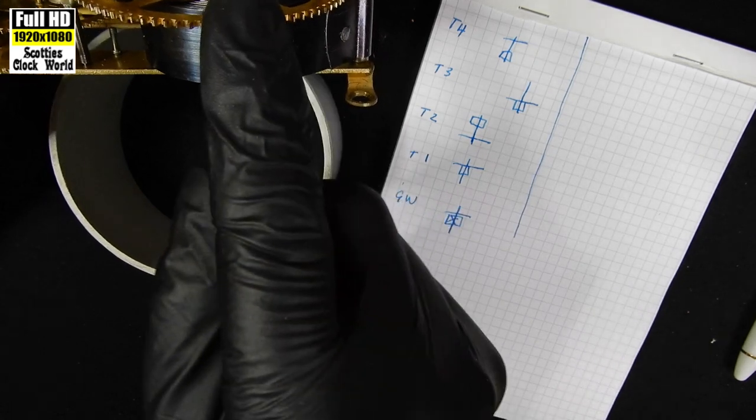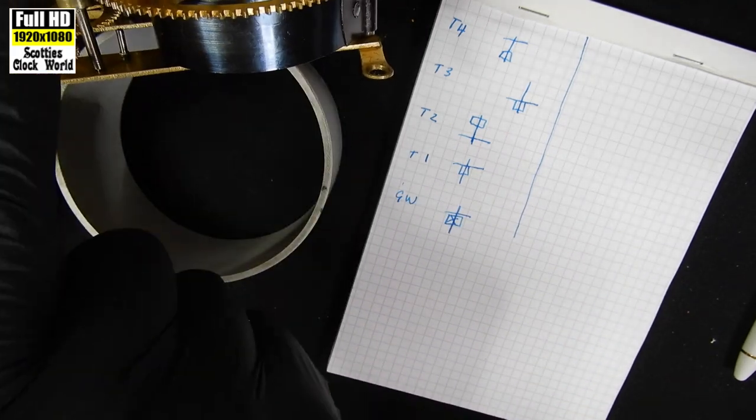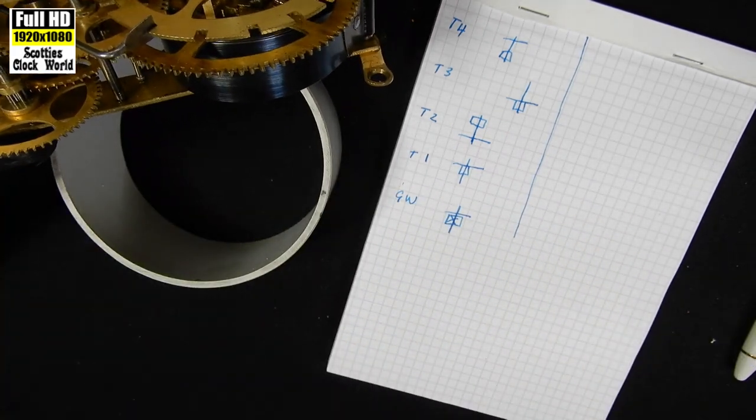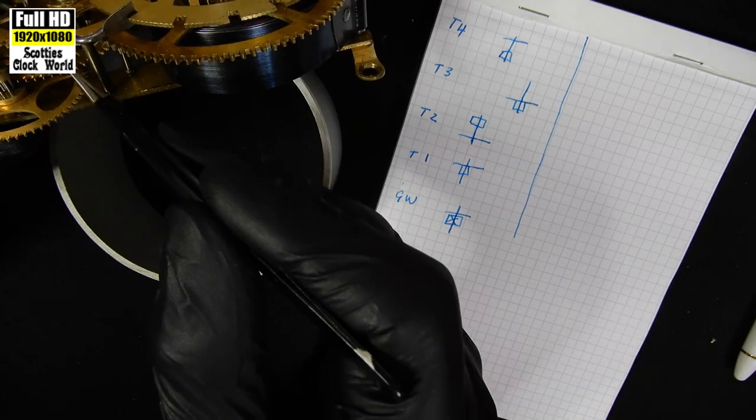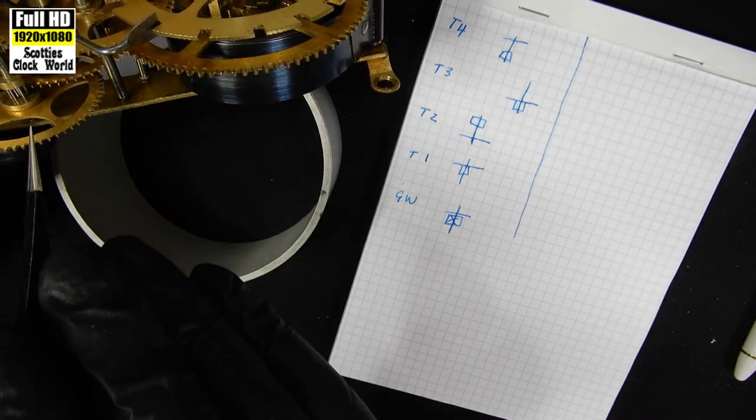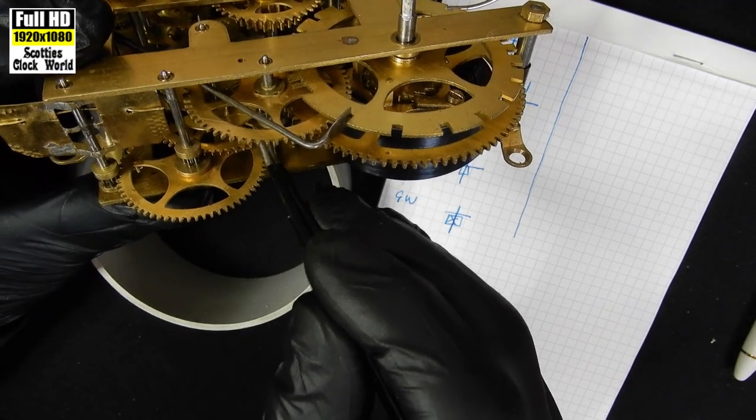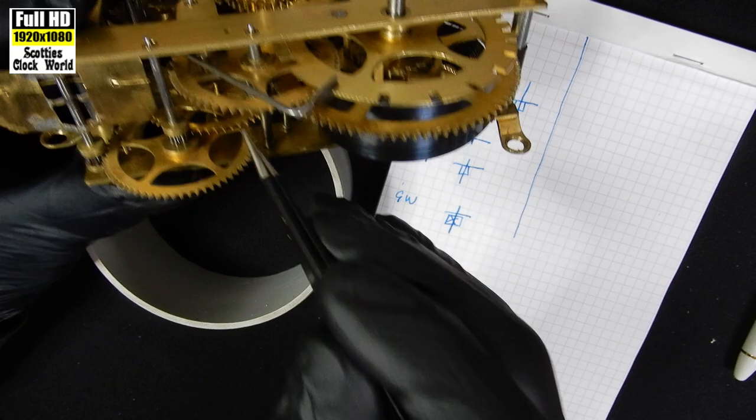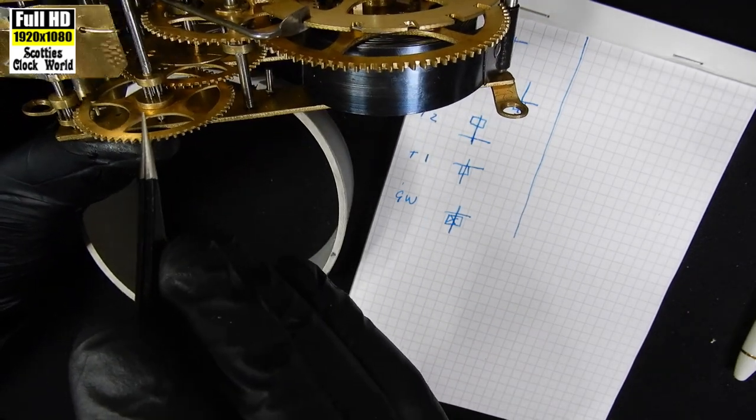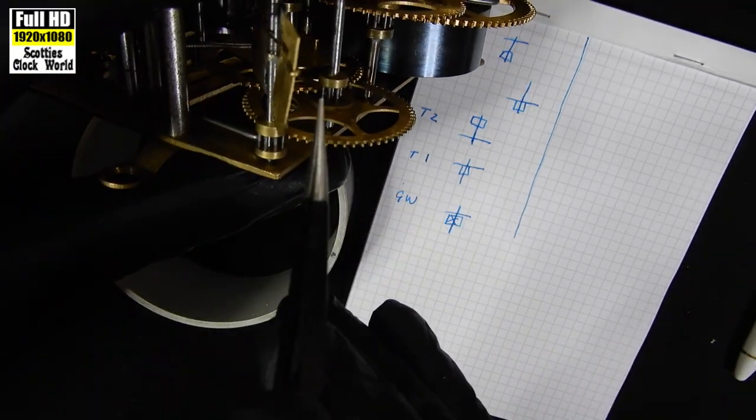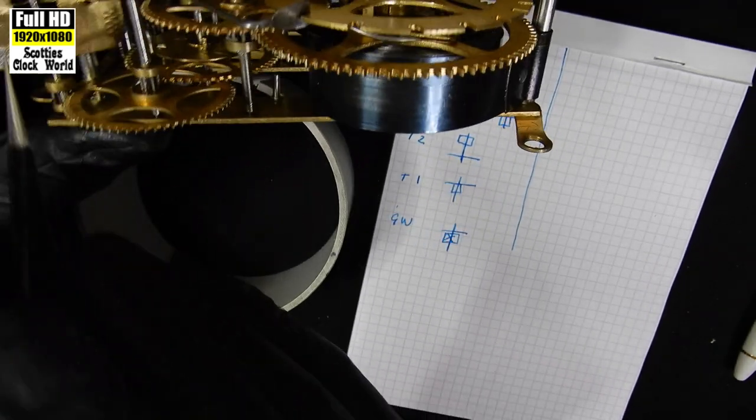That's the going wheel. The first wheel. The second wheel. That's the second wheel in there. Also called the maintenance cam. The third wheel, the warning wheel here and the fourth wheel as such is the fly.